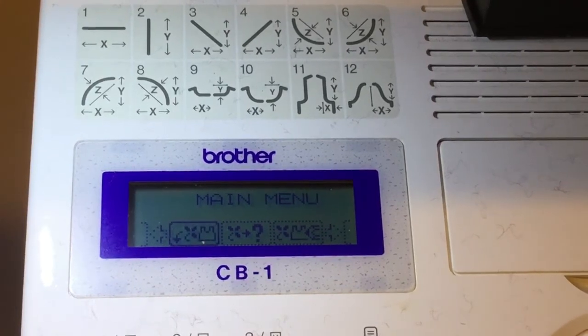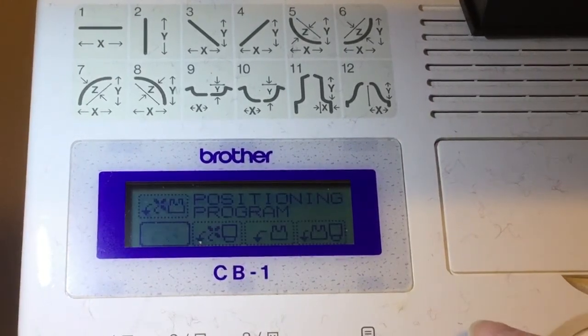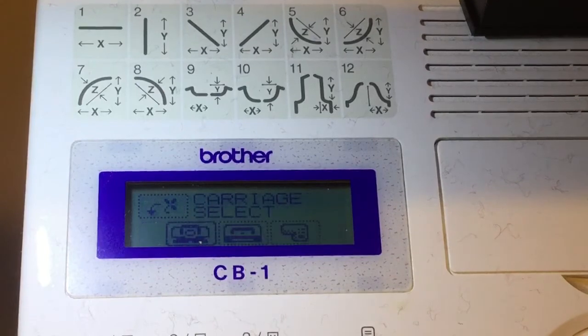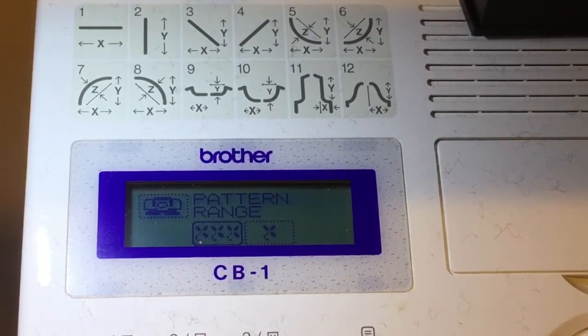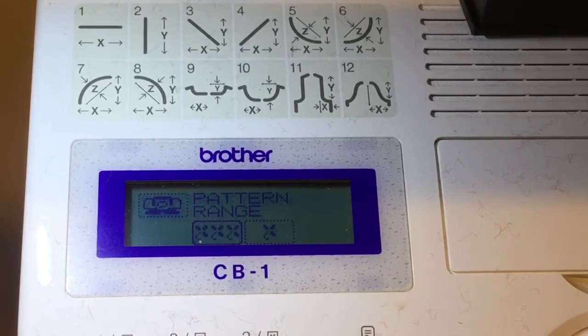I go to positioning. I click on pattern. I want the main carriage. It's an all over pattern, unless of course you want to do a single motif.